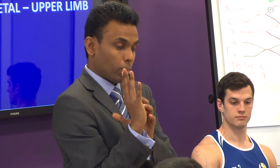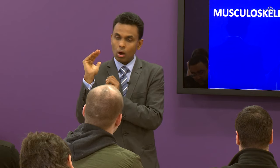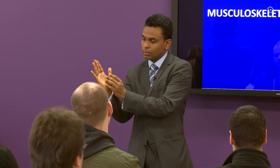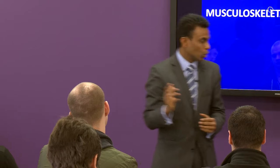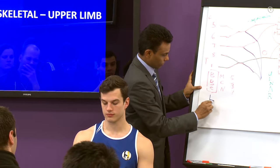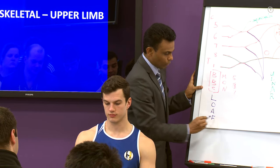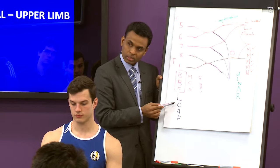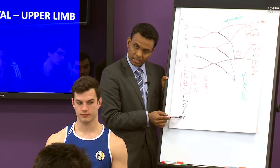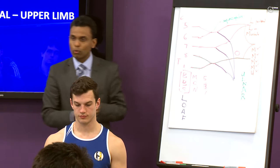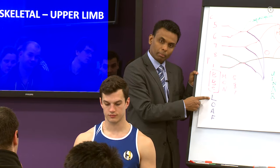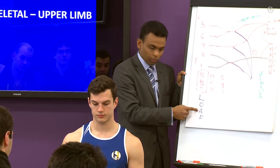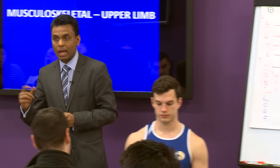In the hand we discuss twenty intrinsic muscles: four thenar, four hypothenar, four palmar interossei, four dorsal interossei, and four lumbricals. All of these are supplied by the ulnar nerve, except those on the radial side — the LOAF muscles — which are supplied by the median nerve.